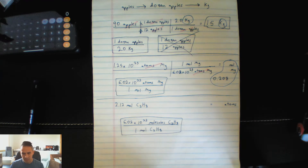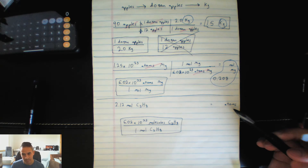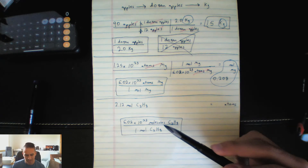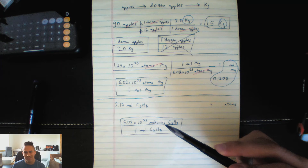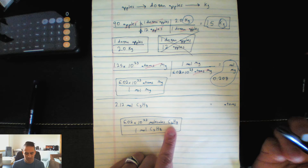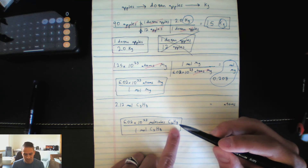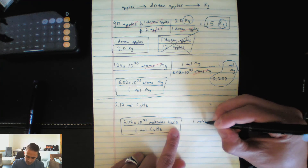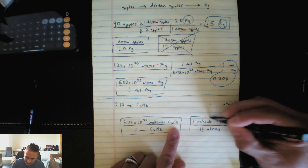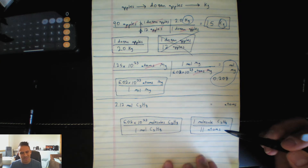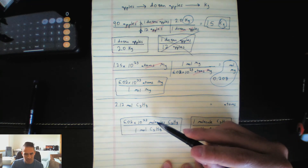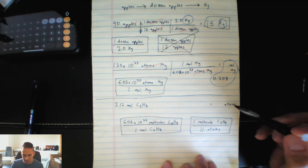Here's where this problem gets a little tricky. If you look at what they want, they want atoms — but our conversion factor has molecules. By definition, a molecule is two or more atoms covalently bonded together. So you can ask: how many atoms are in one molecule of C₃H₈? You just count them up — there are 11: three carbon atoms and eight hydrogen atoms. So in one molecule of C₃H₈, there are 11 atoms. This is actually a two-step problem.